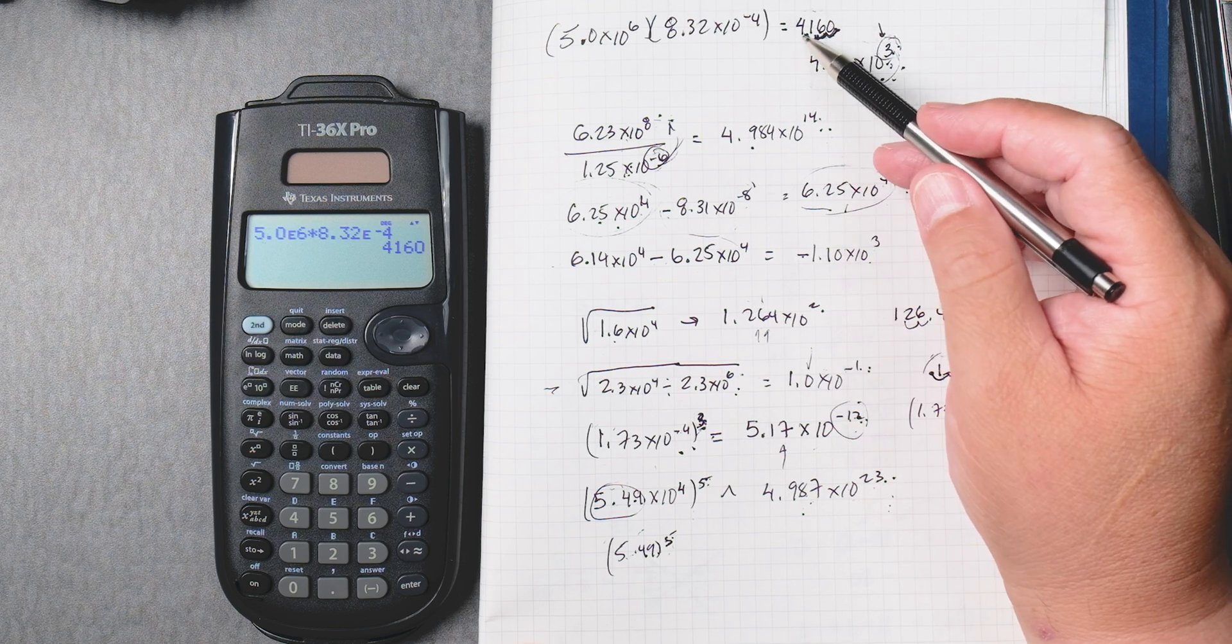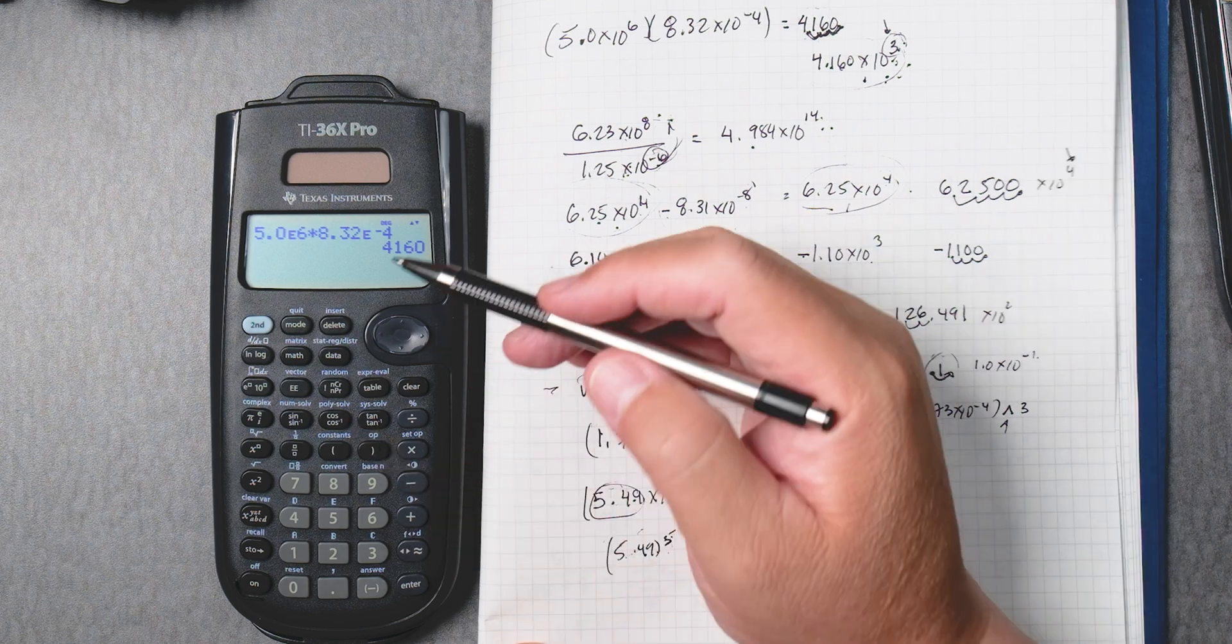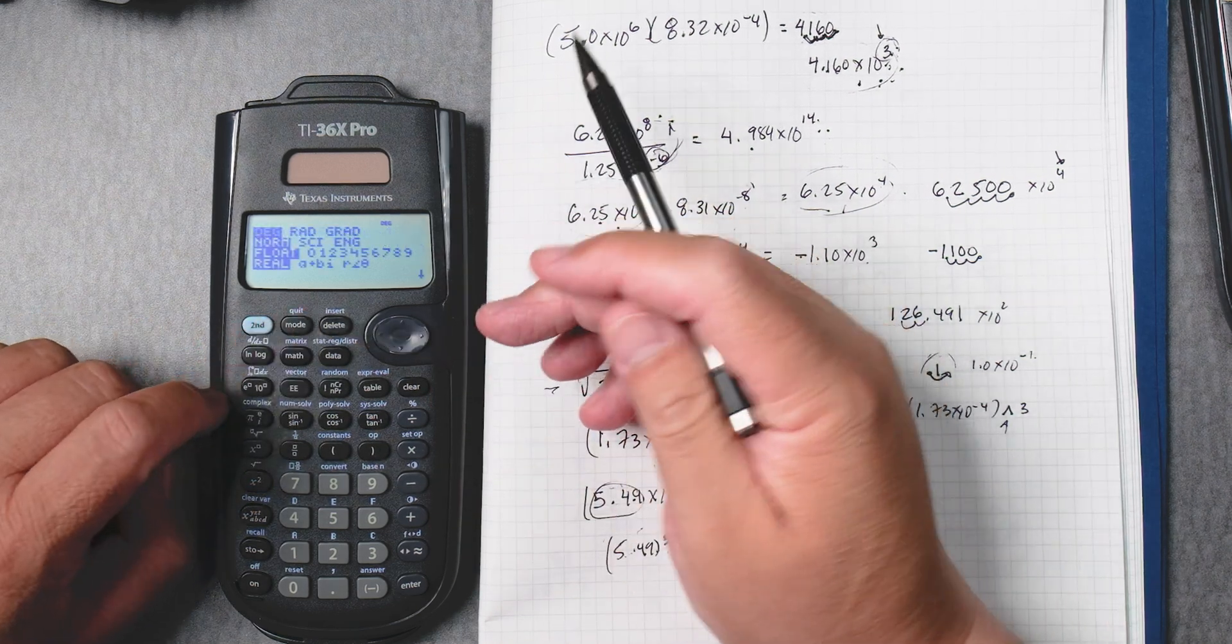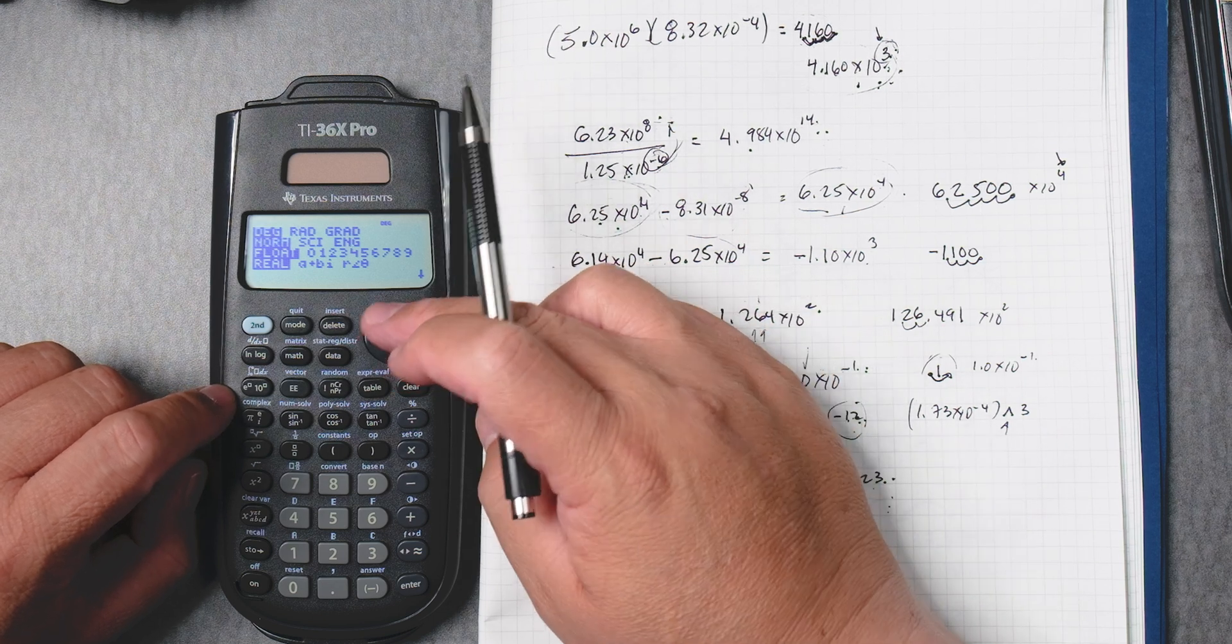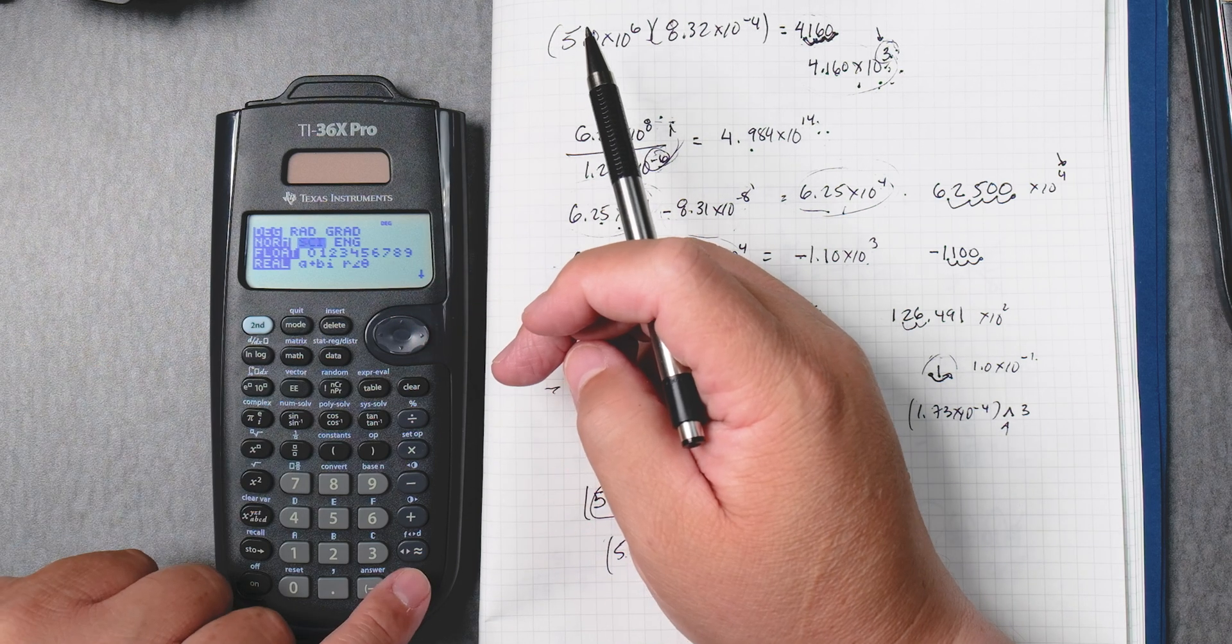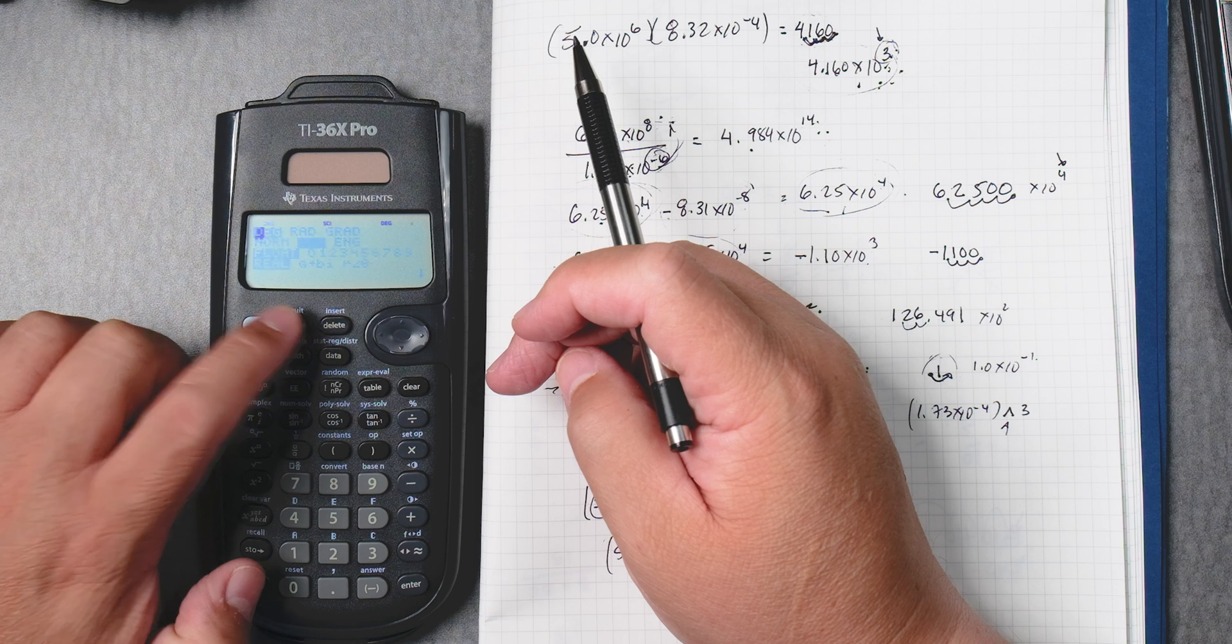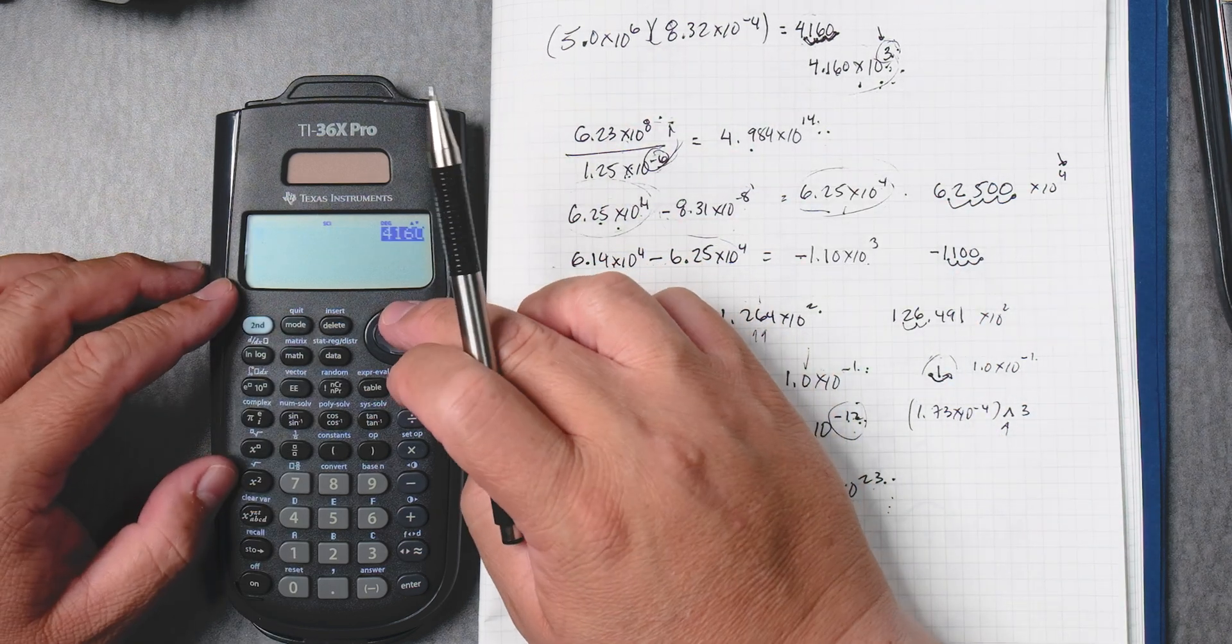Now, how do we change 4,160 into scientific notation on this calculator? On this one, it has the mode button. You press mode, and then you go down with this keypad, and go to science, scientific notation, press enter. Then second mode to quit, and erase the values, it looks like.